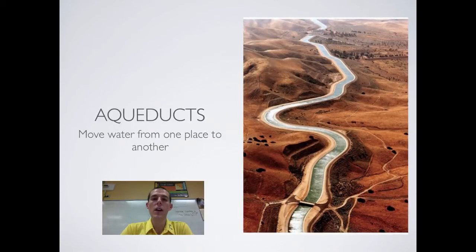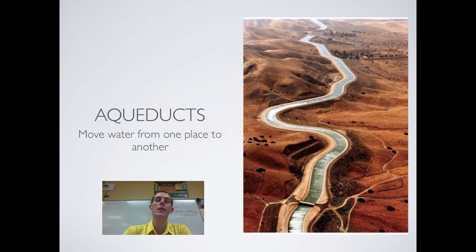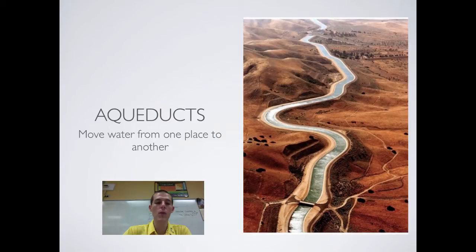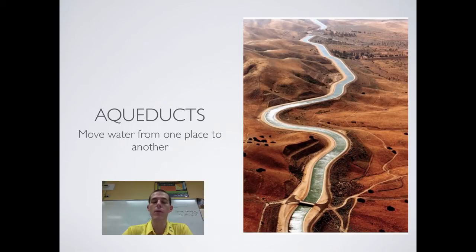Now let's talk about aqueducts. Aqueducts are probably the oldest form of water diversion humans have used, dating back to the 7th century BC. The Romans are best known for them, but the Greeks did it first. The whole purpose of an aqueduct is to move water from one place to another. While you might picture big open canals, aqueducts can also be pipes buried underground, open canals, concrete canals, stone canals, or dirt canals.